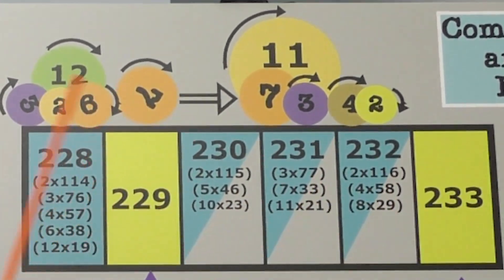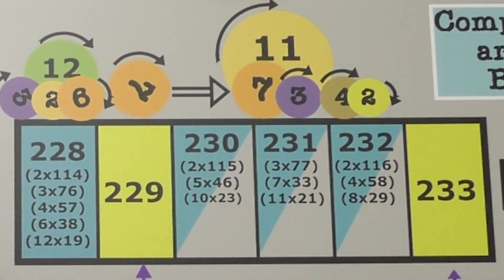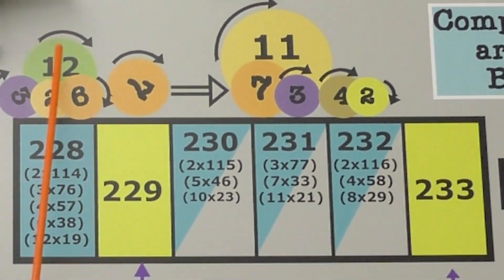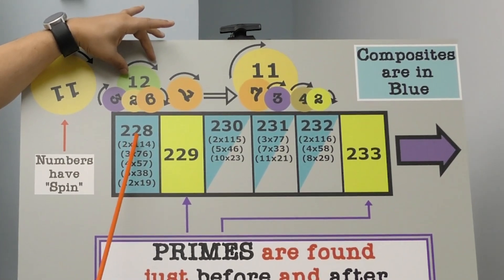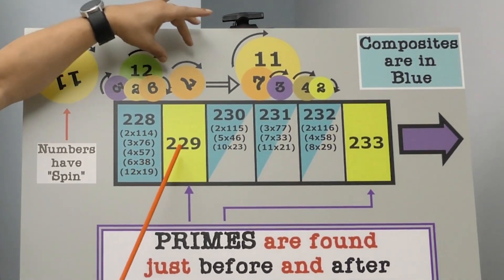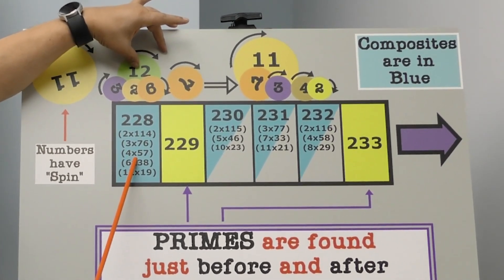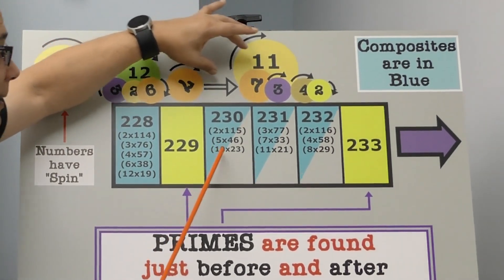Lots of factor sets. Why does that work out? Because numbers have spin. And when the numbers line up over here, they are creating a number with a lot of factor sets. Right next to a number with a lot of factor sets is a prime.